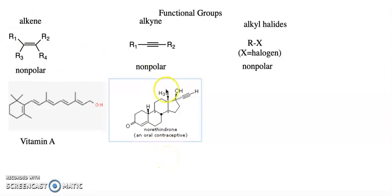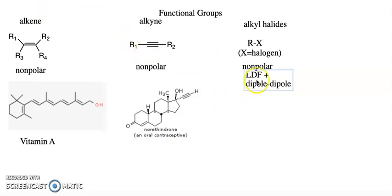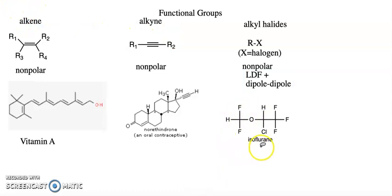Next I want to talk about alkyl halides. They have the general formula RX, where X is any halogen. This is a nonpolar functional group usually having only London dispersion forces, but there are also some dipole-dipole forces involved that make them slightly polar. An example is isoflurane, which is used as an anesthetic for putting people to sleep during surgeries.